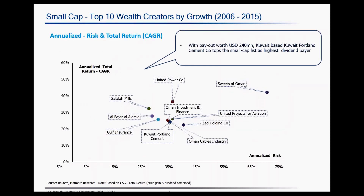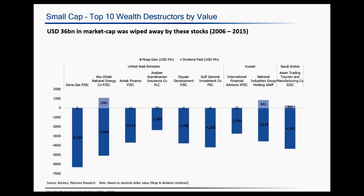This is the risk and return profile of the small cap wealth creators in terms of total return. Sweets of Oman, which generated the highest return, is also the most volatile stock, with a volatility of close to about 85% among the top 10 wealth creators.